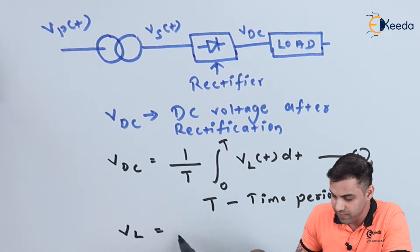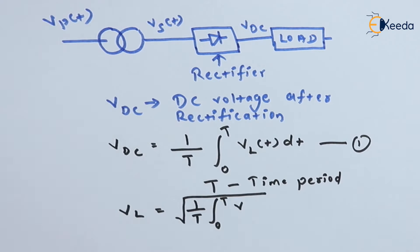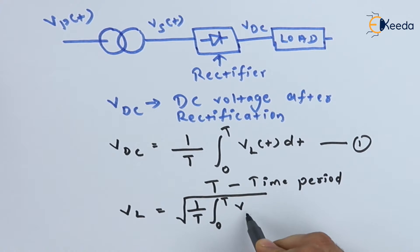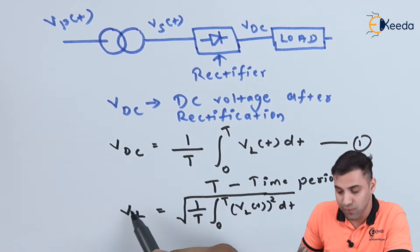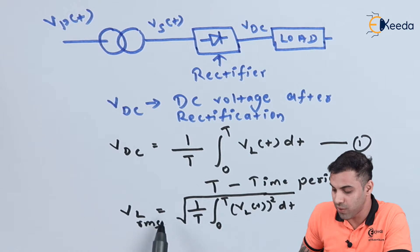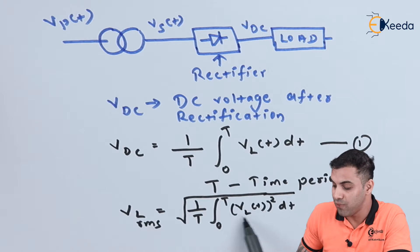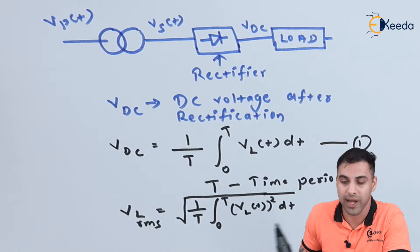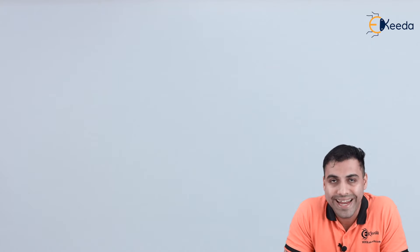The RMS value of the load voltage, V_L_RMS, is equal to the square root of (1/T) times the integral of V_L(t)² dt, with the limit of integration from 0 to T. Another important terminology we need to understand is the form factor.